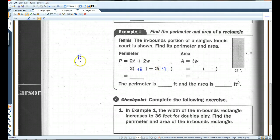2 times 78. If you can do that in your head, great. If not, no worries. It's 156. And 2 times 27, 54. 156 plus 54, 210. Now, the area is length times width. So, we've got 78 times 27. That's 56. Carry the 5. 49 plus 5 is 54.